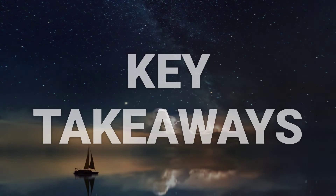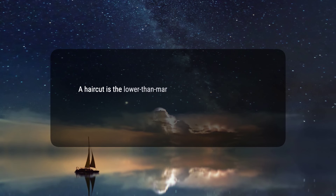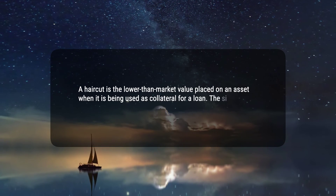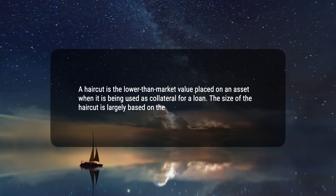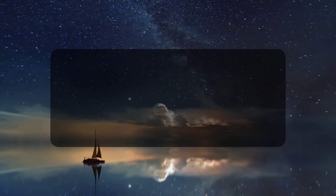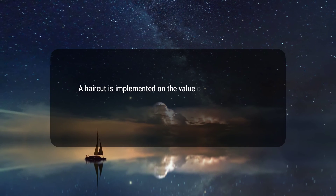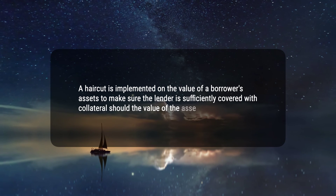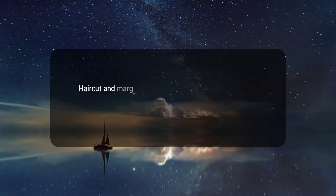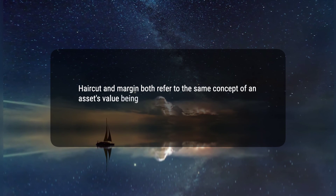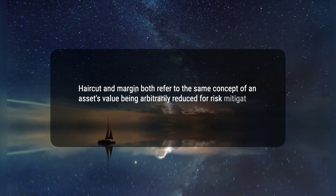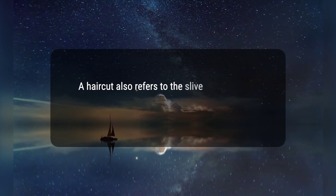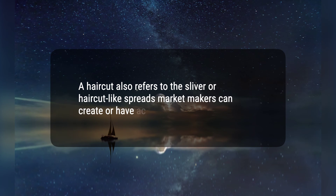Here are four key takeaways. 1. A haircut is the lower than market value placed on an asset when it is being used as collateral for a loan; the size of the haircut is largely based on the risk of the underlying asset. 2. A haircut is implemented on the value of a borrower's assets to make sure the lender is sufficiently covered with collateral should the value of the assets decline. 3. Haircut and margin both refer to the same concept of an asset's value being arbitrarily reduced for risk mitigation, though they are expressed differently. 4. A haircut also refers to the sliver or haircut-like spreads market makers can create or have access to.